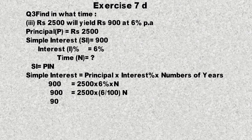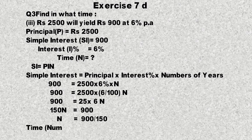20 اور 20 سے کٹ جائیں گے۔ 25 × 6 = 150، تو 150n = 900۔ n = 900/150۔ یہ mathematical rule کے مطابق نیچے جا کر divide ہوگا۔ n = 6 years۔ جواب 6 سال ہے۔